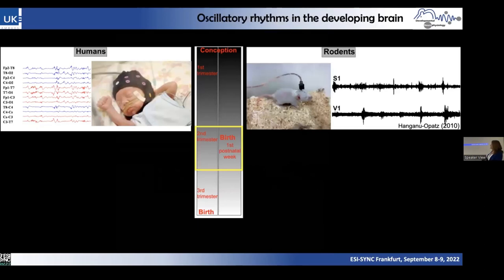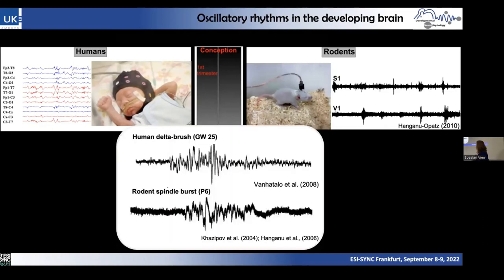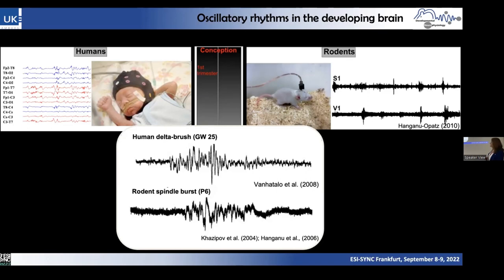The period I showed you — corresponding to the second gestational trimester — matches the period shortly after birth in a rat or mouse. If you look at a single discontinuous event in humans and rodents, these rhythms are very similar; it's almost impossible to say whether it's a human delta brush or a rodent spindle burst. The nomenclature is a purely historical issue, which creates a big problem when reading the literature, because the same events often appear with different names depending on the species.